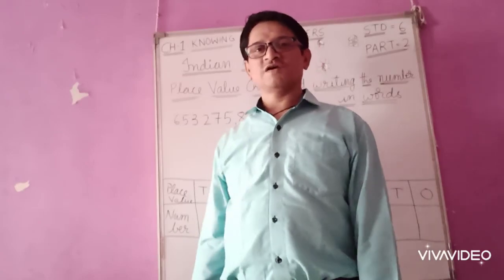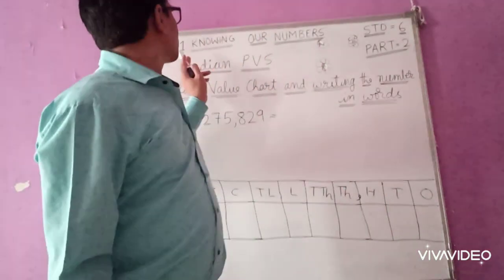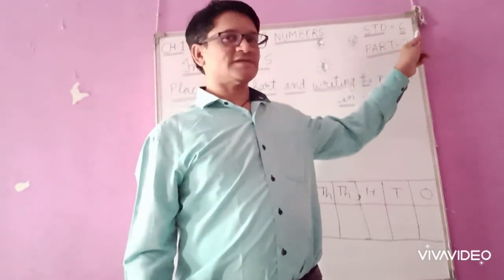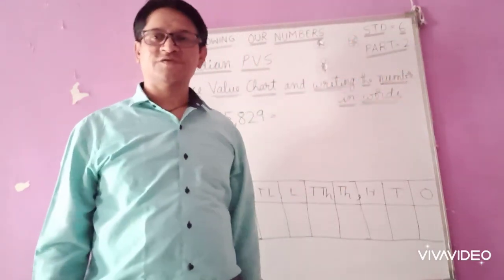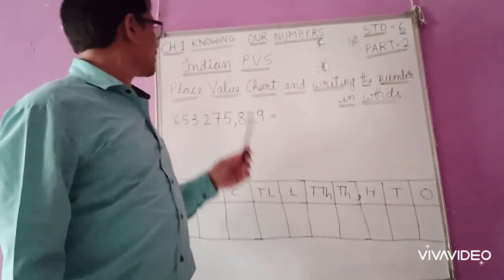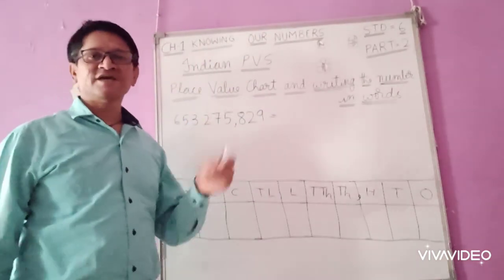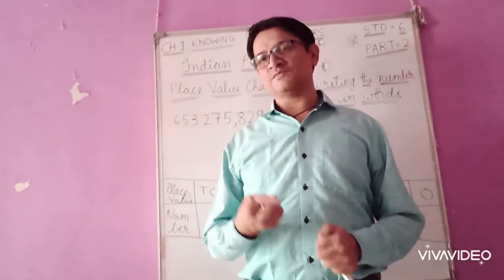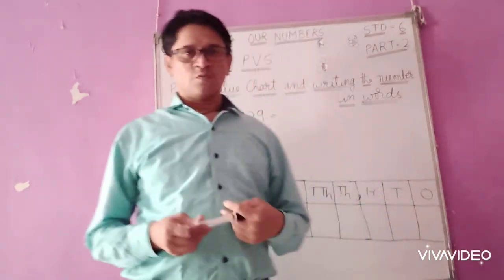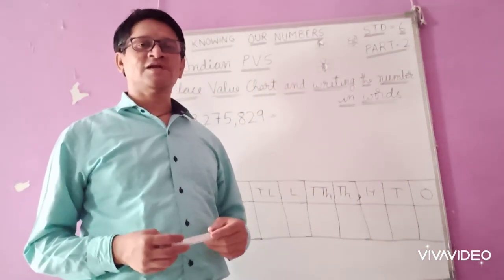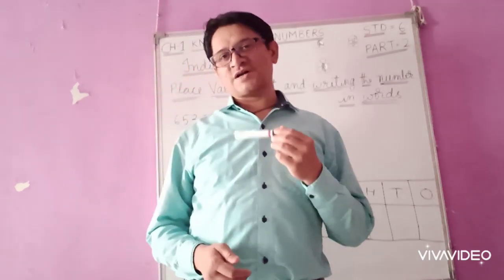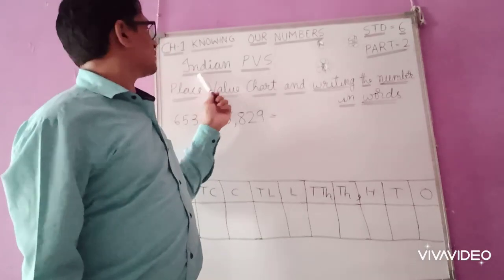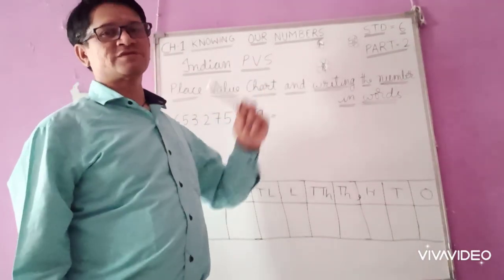Good morning students. We are going to continue our Chapter 1, 'Knowing Our Numbers' of Standard 6. This is the second part of the video. Today we are going to learn the place value system. There are two types of place value system: one is the Indian place value system and the international place value system. First, we are going to learn about the Indian place value system.